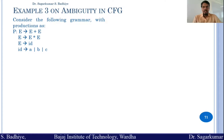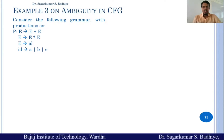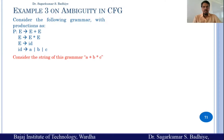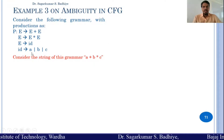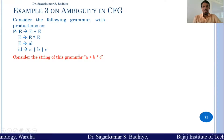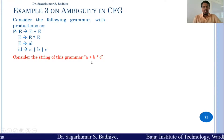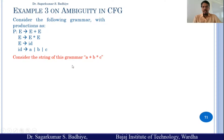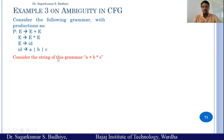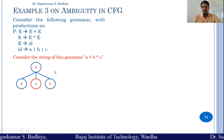Consider another example on ambiguity in context-free grammar. Consider the following grammar with production rules: e → e + e, e → e * e, e → id, and id → a | b | c. Consider the string a + b * c.